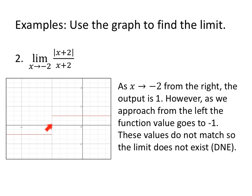Now, as x approaches negative 2, here's our negative 2. That's our input. That's our x value that we're getting close to. From the right, the output is 1. However, as I get close to negative 2 from the left, the output is negative 1. Do they go to the same value? Do they meet up? No. These values do not match, so the limit does not exist. And we'll frequently call that DNE because I, like many mathematicians, get tired of writing, and so we abbreviate things. DNE, does not exist.